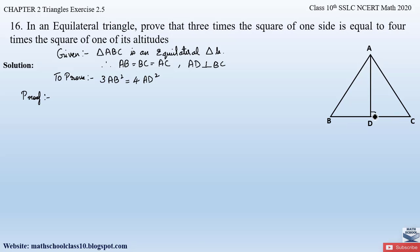Now putting down the proof. Since AD is perpendicular to BC, it makes a 90-degree angle on both sides of the altitude. Since we have to prove 3AB² = 4AD², let us consider a right-angle triangle with side AB. Looking at triangle ABD, both AB and AD are sides of triangle ABD, so we will consider triangle ABD.